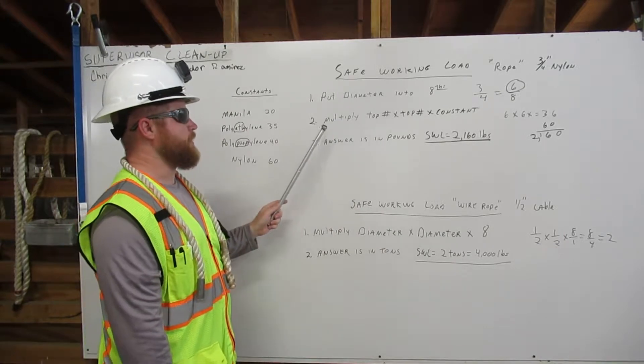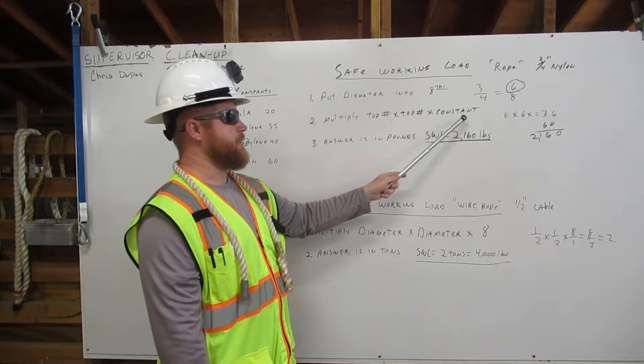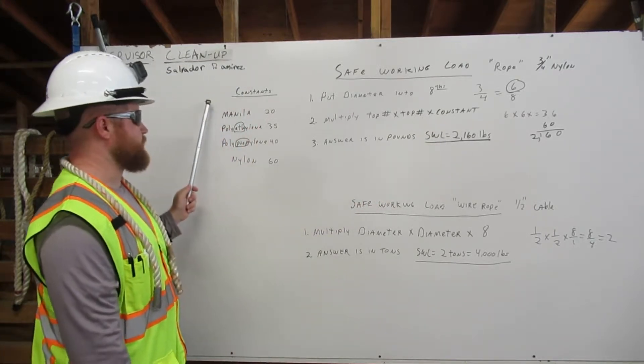The second thing we do is multiply the top number times the top number times the constant. Over here we have our constants.